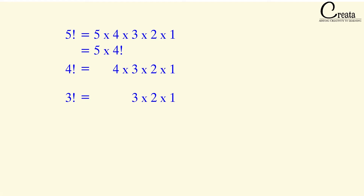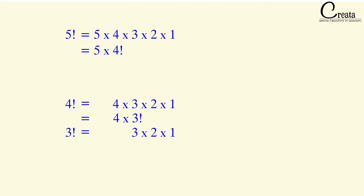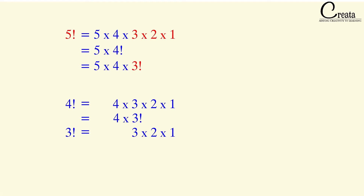Similarly, we can rewrite 4 factorial as 4 into 3 factorial. We can also rewrite 5 factorial as 5 into 4 into 3 factorial — replacing 3 into 2 into 1 with 3 factorial. Similarly, 5 factorial is also equal to 5 into 4 into 3 into 2 factorial. We are just rearranging the numbers and playing with the factorial so that you can understand it in more detail. Factorial is simply the multiplication of all whole numbers from the given number down to 1.